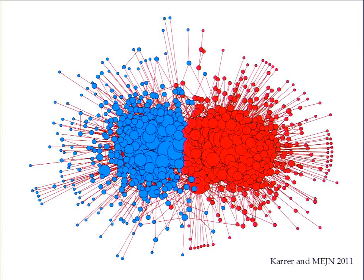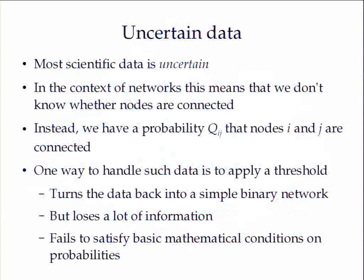Regarding the number of groups: it is a difficult problem to determine how many communities to look for. Often we try the analysis for many different numbers of groups and look at what we learn. The model selection problem — choosing the number of groups — is not entirely solved. Almost everything in the networks literature assumes the data we have are correct. But of course that is not true — these are experimental data, and very few experimental data are completely correct.